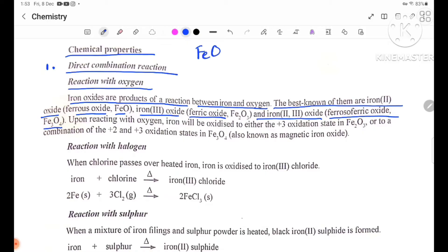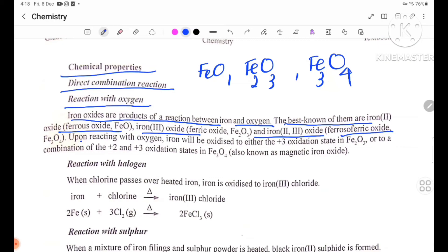FeO iron(II) oxide ferrous oxide, Fe2O3 iron(III) oxide ferric oxide, Fe3O4 iron(II,III) oxide ferrous ferric oxide. Iron will be oxidized to either plus 3 oxidation state in Fe2O3 or to a combination of the plus 2 and plus 3 oxidation states in Fe3O4, also known as magnetic iron oxide.